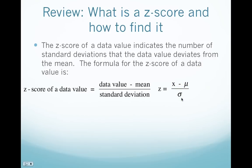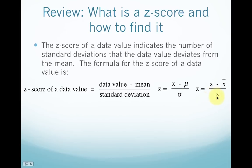For a sample, we have x minus x-bar over s. Remember that for a population, the mean is mu; for a sample, the mean is x-bar. For a population, the standard deviation is lowercase sigma; and for a sample, the standard deviation is s. The symbol for z-score is the same in both cases: z.